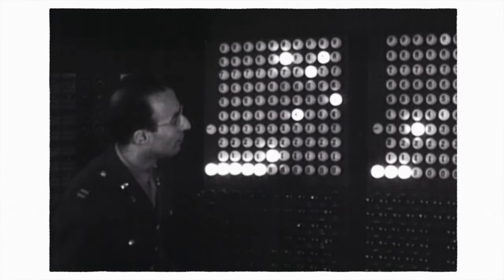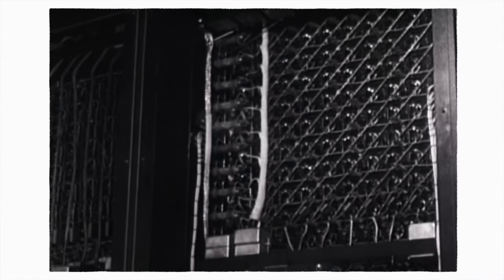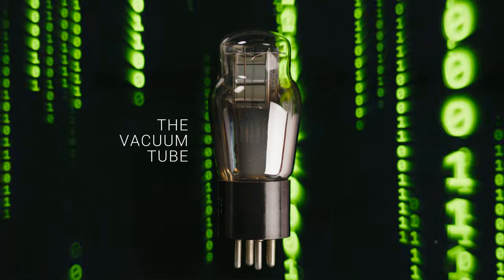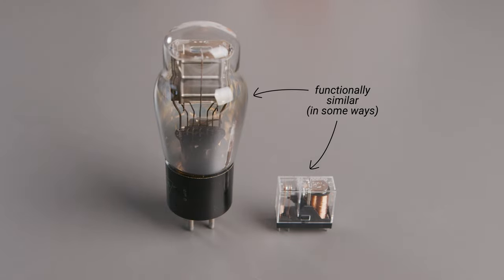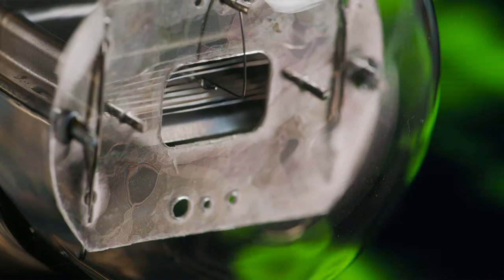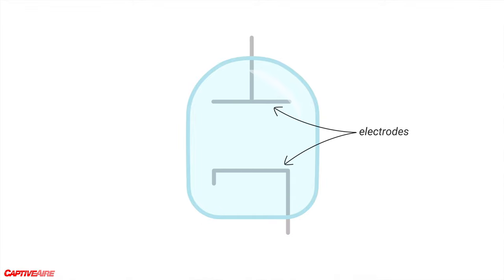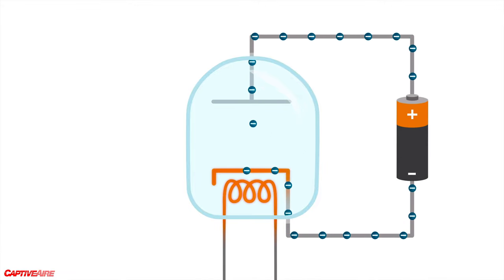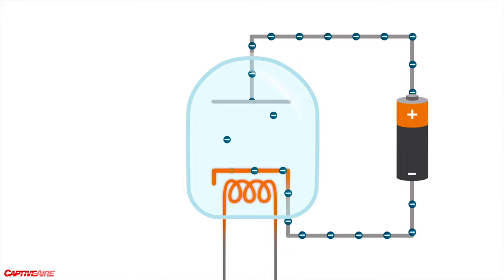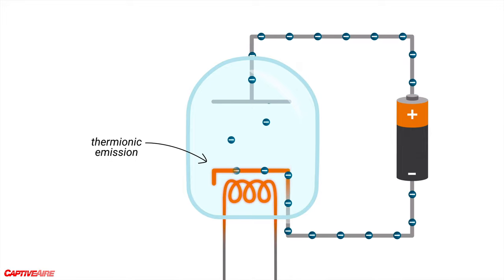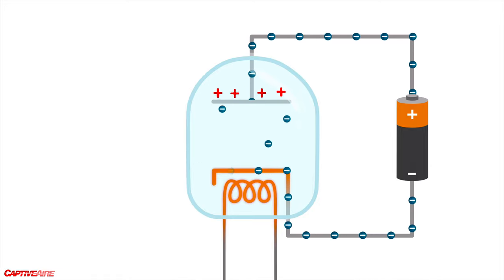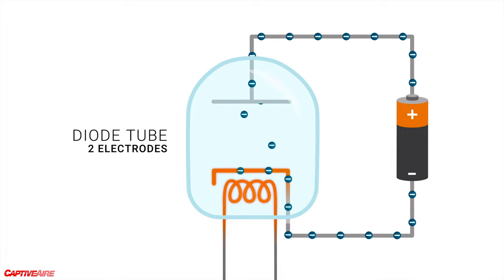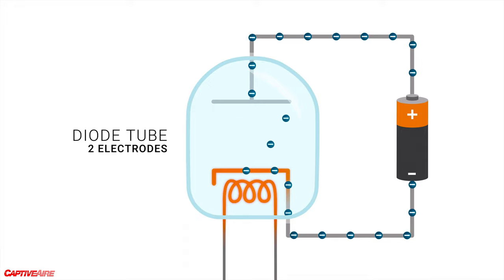Even back in the 40s, when the first real computers were being developed, designers chose a different component to build logic gates: the vacuum tube. Vacuum tubes work on a similar overall principle as relays — one circuit controls another — but how it does it is completely different. This glass vacuum enclosure houses two metal strips called electrodes. One electrode is heated by a filament. When voltage is applied across these electrodes, electrons boil off and jump off the heated electrode in a process called thermionic emission. Since the other electrode is positively charged, the electrons cross the gap and flow across the circuit. In this configuration, the vacuum tube acts as a diode, since electrons can only flow in one direction.